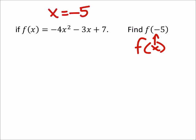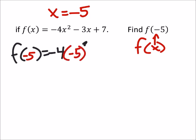So when we rewrite this, we've got f of negative 5. And this equals negative 4 times x, which is negative 5. We're going to square that, minus 3 times the negative 5.